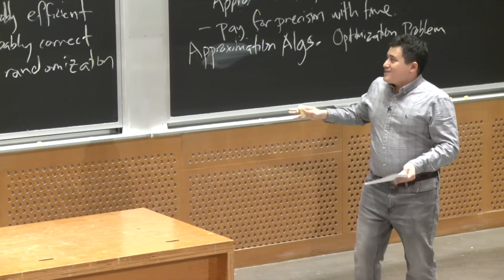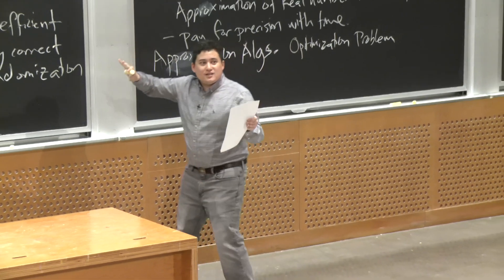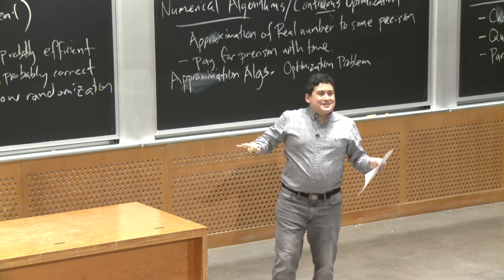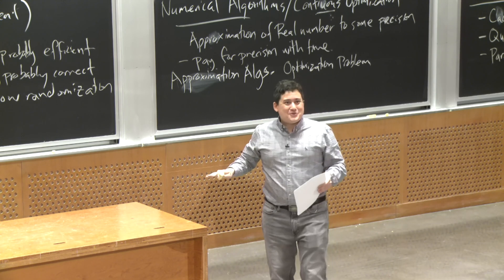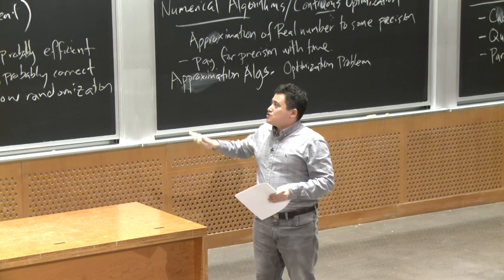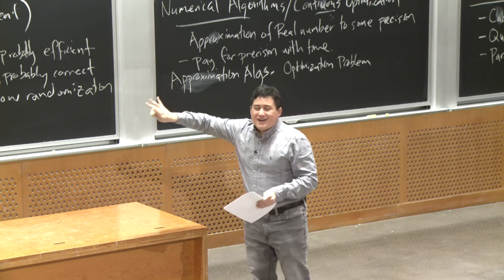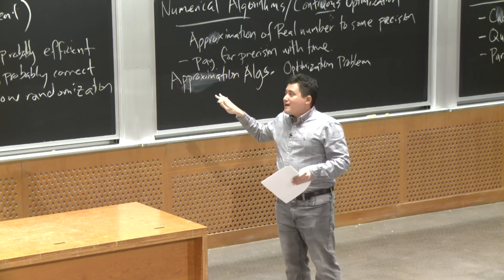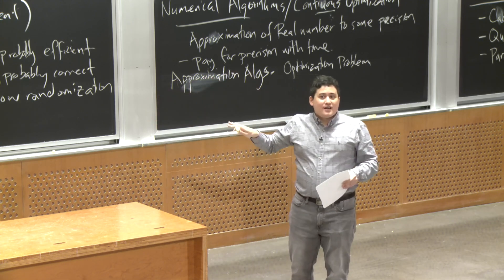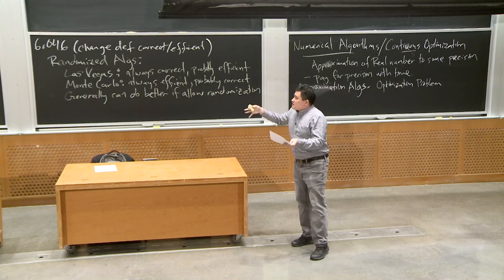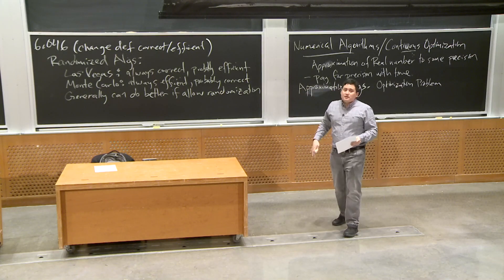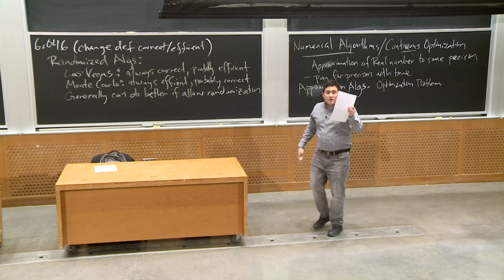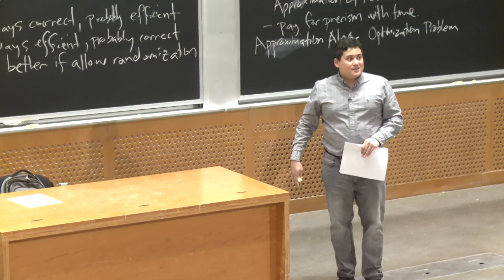That's a brief overview of the different directions this class, 6.006, and theory in general could lead you into — a huge array of branches of theory and different problems you could address with different types of computers. I hope this gives you a good understanding of the exciting directions you can go after this class in terms of how to solve problems computationally.